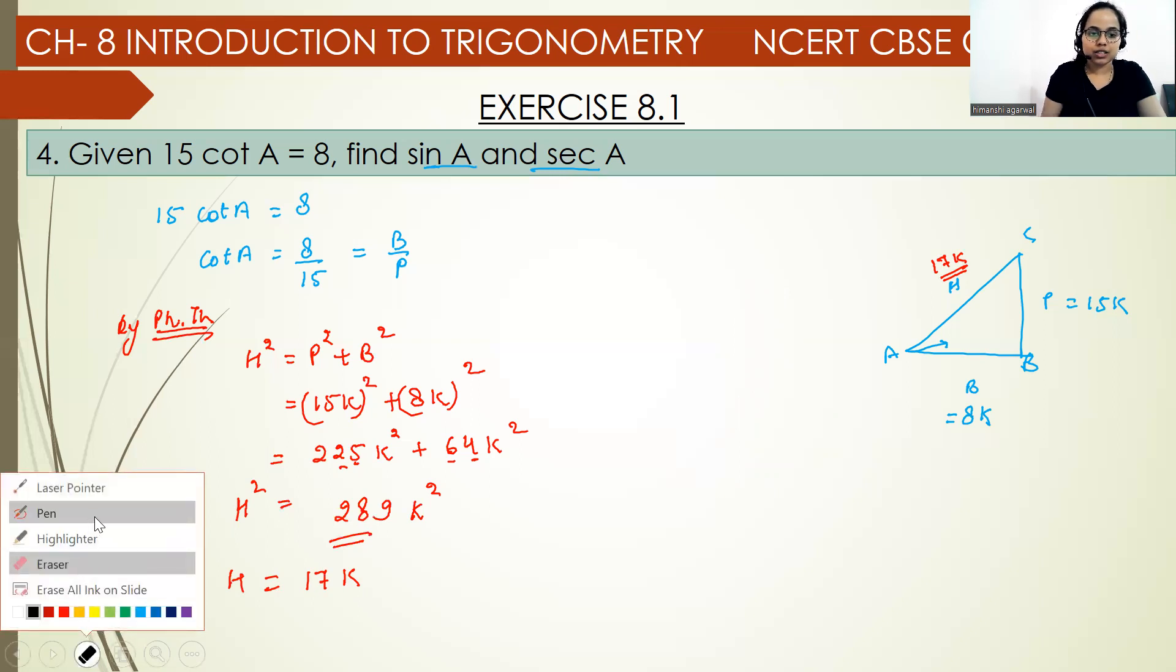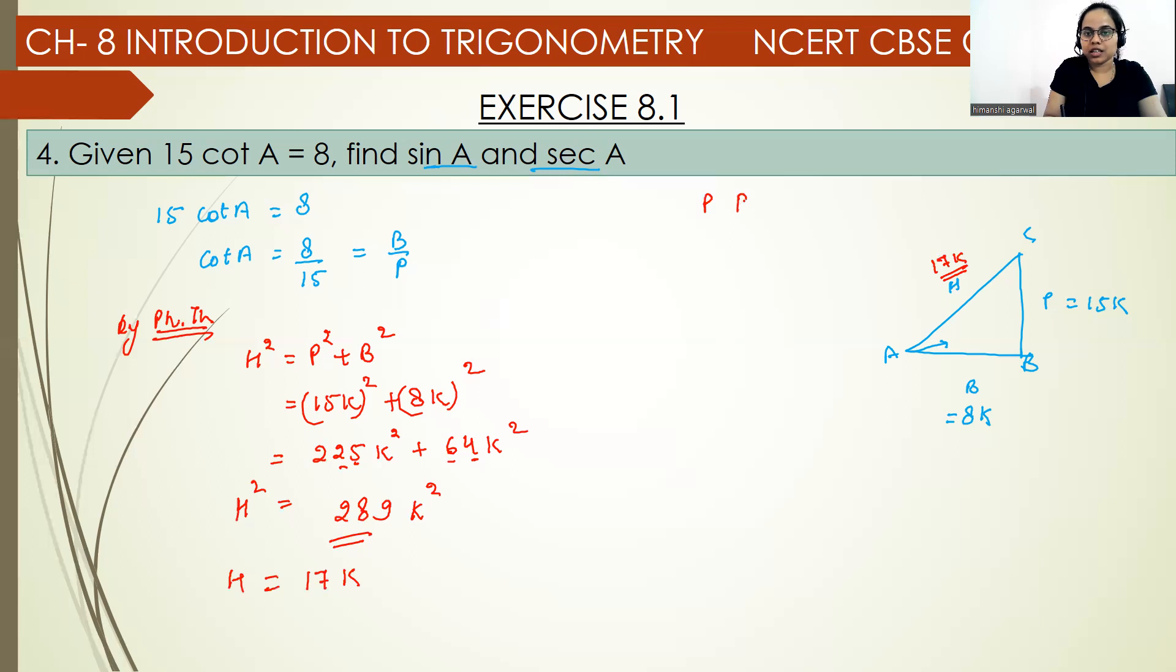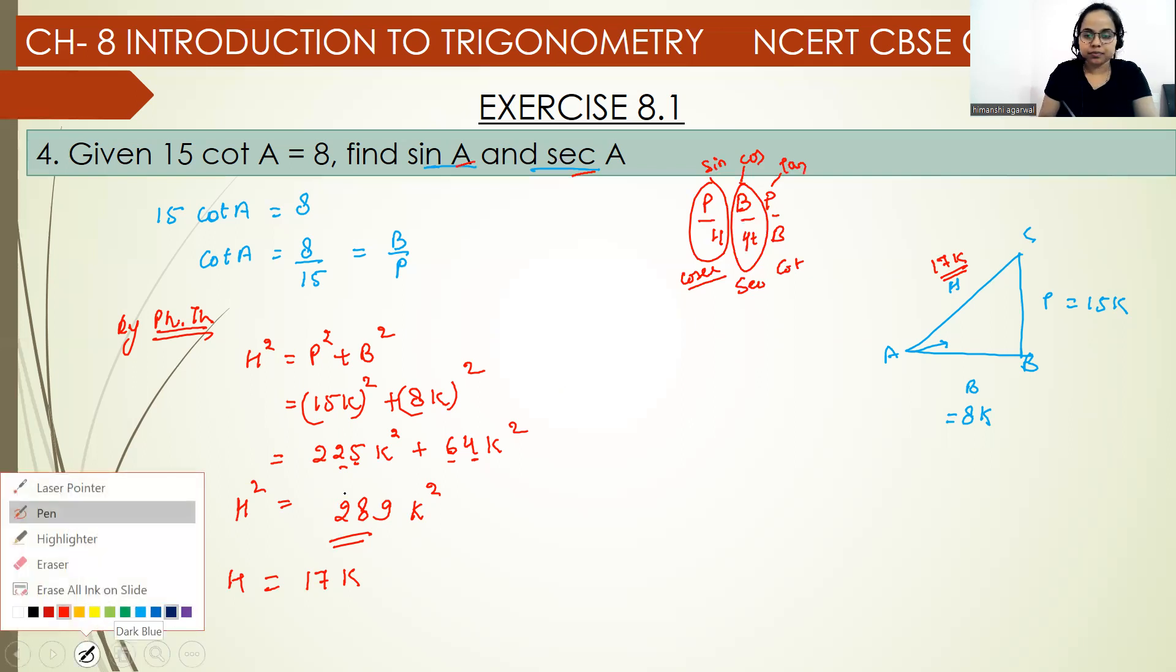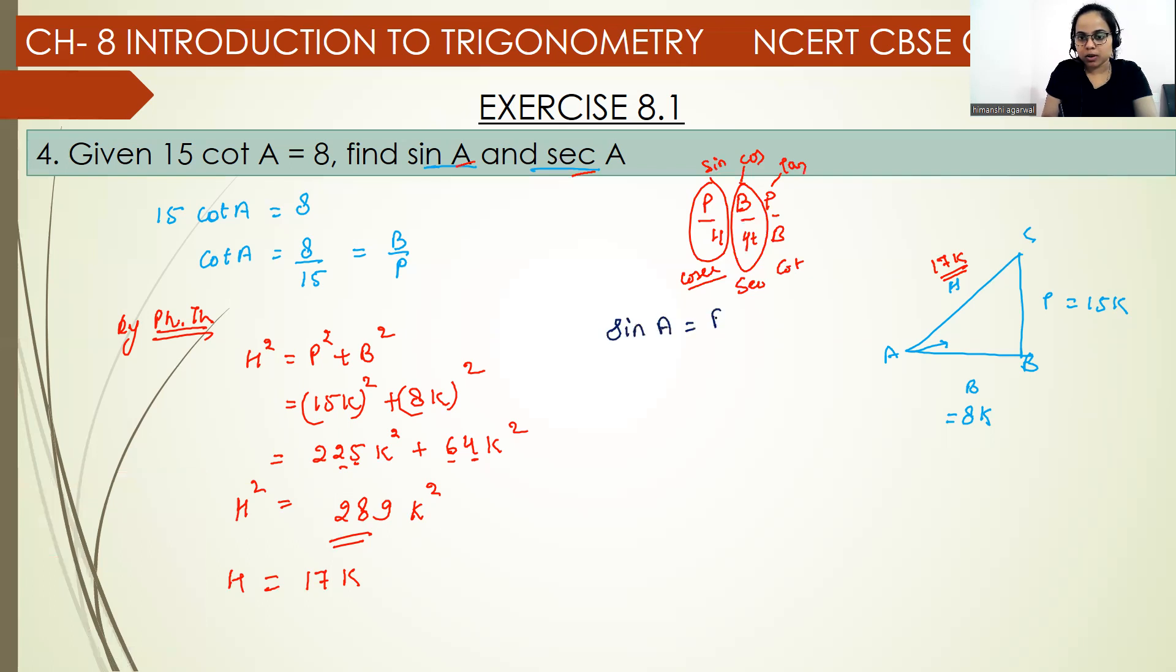Now what is sin A? We all know the Pandit Badhri Prasad concept. If you forget it, don't forget it. The first ratio is sine, this is cosine, and this is tangent. We will do reciprocal here. So we can write sin A will be equal to perpendicular upon hypotenuse, whereas sec A will be equal to hypotenuse upon base.